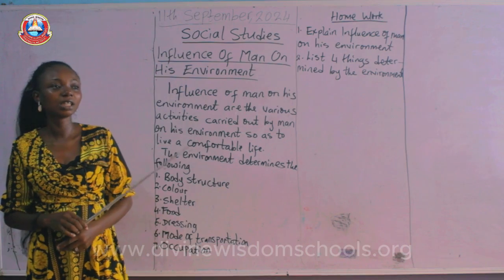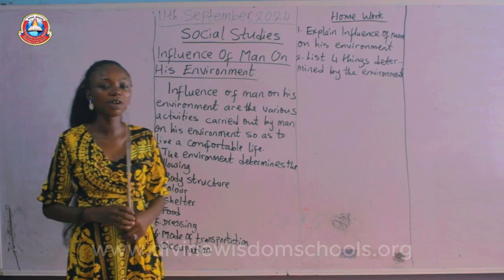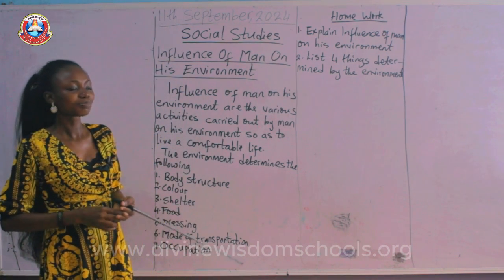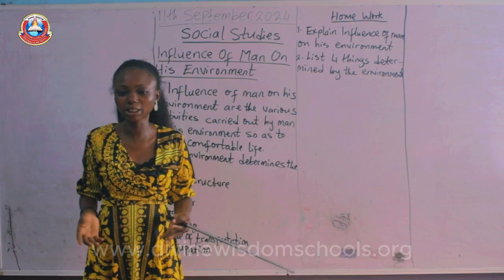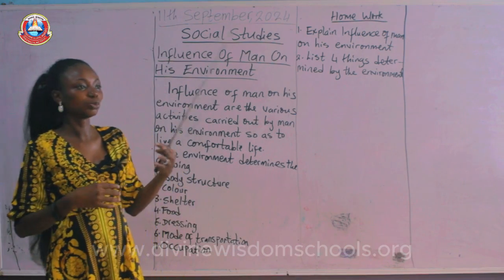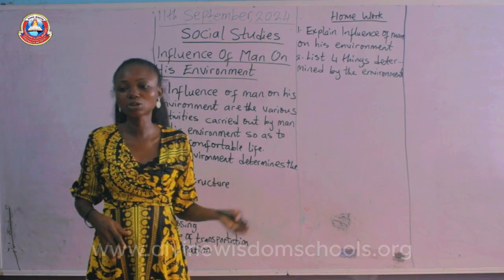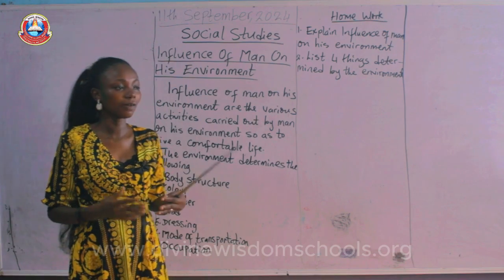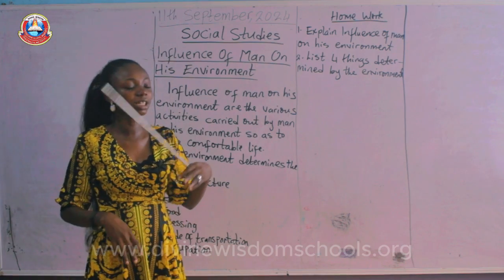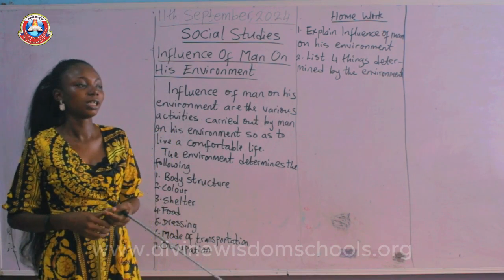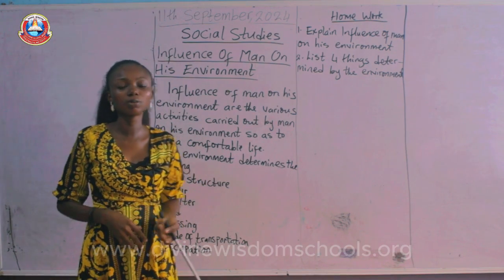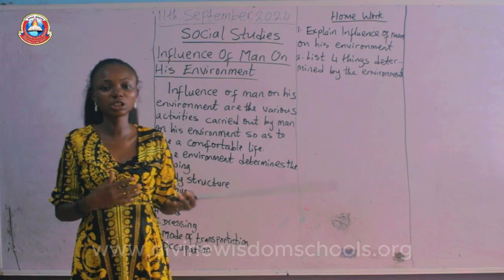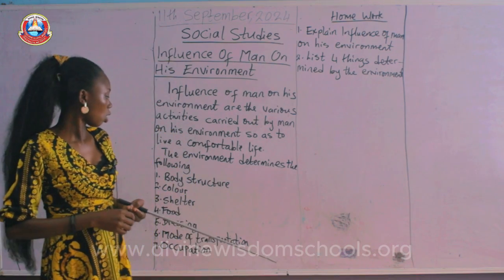The next thing the environment determines is food. The environment we find ourselves in determines the kind of food we eat. Those in forested environments go hunting — they catch bush meat like antelope and grass cutter. They also grow crops. Those in riverine areas catch fish and other water animals.